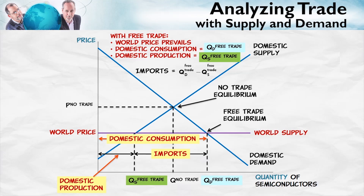The difference, of course, is made up by imports. So with trade, domestic consumption will be at QD free trade — some of that will come from imports, and some from domestic suppliers. That's our analysis of international trade using supply and demand.